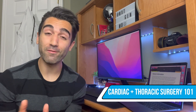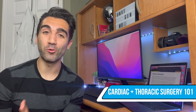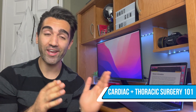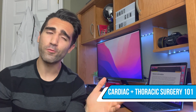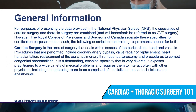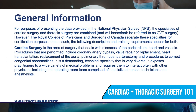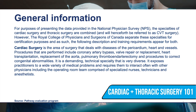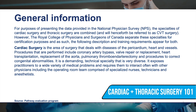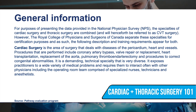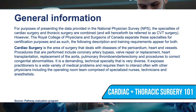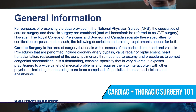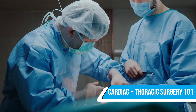From the top, a little bit of information about the specialty. The Canadian Medical Association divides cardiac and thoracic surgery into two different subcategories. Cardiac surgery is the area of surgery that deals with diseases of the pericardium, the heart, and vessels. Procedures performed include coronary artery bypass, valve repair or replacement, heart transplantation, replacement of the aorta, pulmonary thromboendarterectomy, and procedures to correct congenital abnormalities.